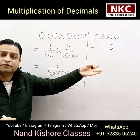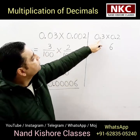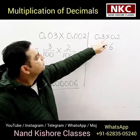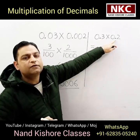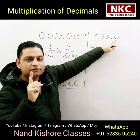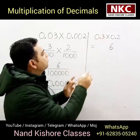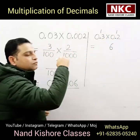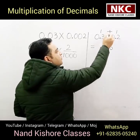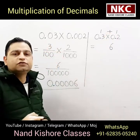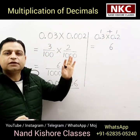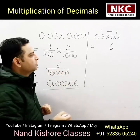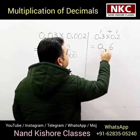After the decimal in the first number, how many digits are there? One digit. In the second number, after the decimal, how many digits are there? One digit. So, 1 plus 1 equals 2. That means in my final answer, after the decimal, 2 digits will be there. So, directly I can write the answer as 0.06.